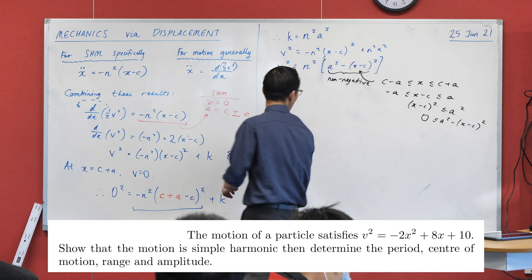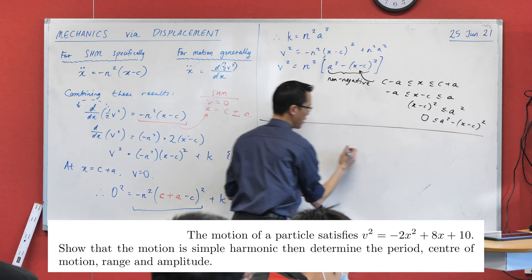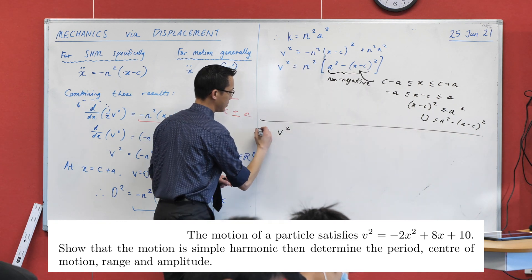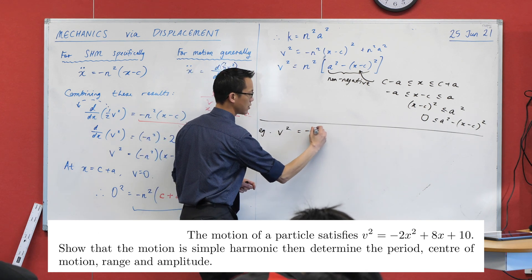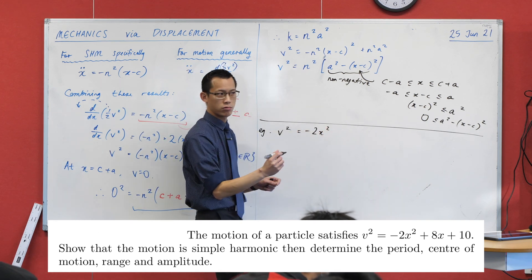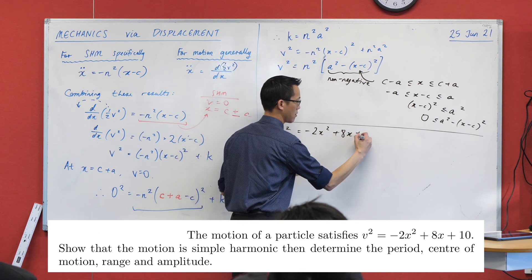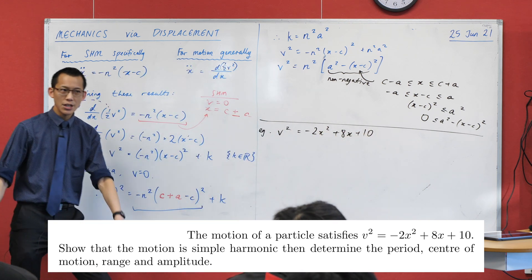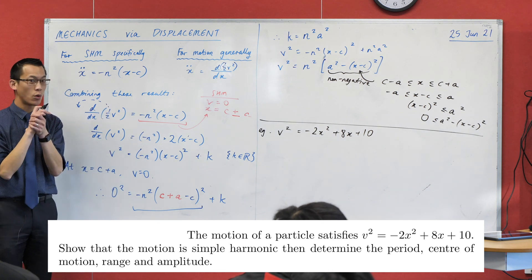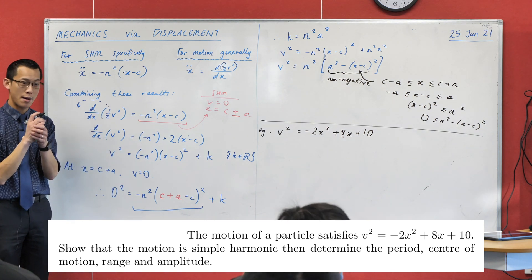Okay, so this is the situation. Let me jot down what we're having a look at here. Our v squared, this is our example. What's it equal to? It's negative 2x squared. What's the rest of it? 2x squared plus 8x plus 10. So first step, I want to prove that this is simple harmonic motion.